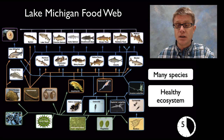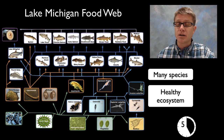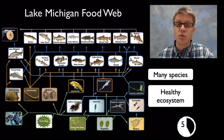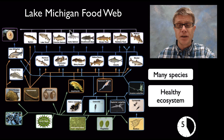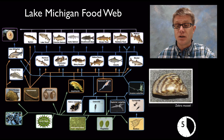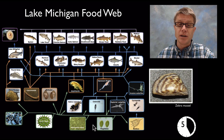In an ecosystem we want it to be healthy, and to be healthy you have to have as many different relationships as possible so that big changes in one area don't affect the whole ecosystem. This is a simple food web of Lake Michigan — you can see how complex it is. It's healthy if we've got a lot of species, but invasive species like the zebra mussel, introduced into Lake Michigan, are eating a lot of the phytoplankton and disrupting the whole food web all the way up.